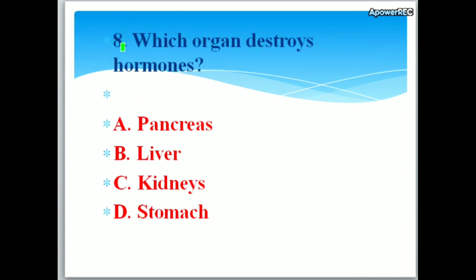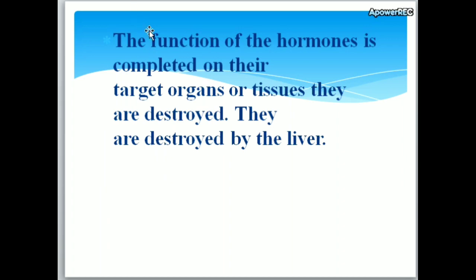Which organ destroys hormones? Options: A. Pancreas, B. Liver, C. Kidneys, D. Stomach. The correct answer is liver. The liver destroys hormones once the function of the hormone is completed on their target organs or tissues.